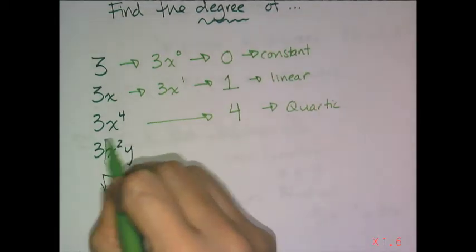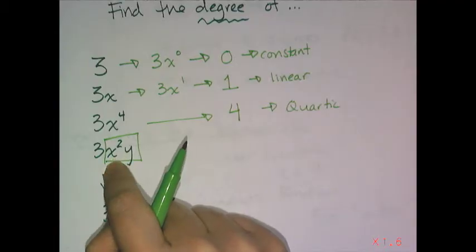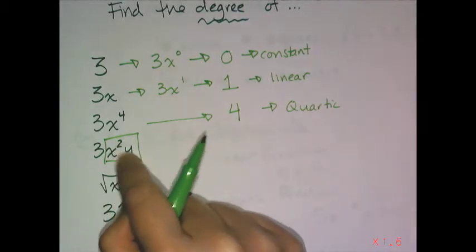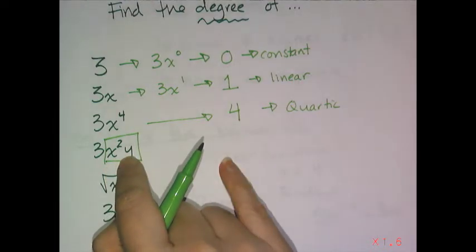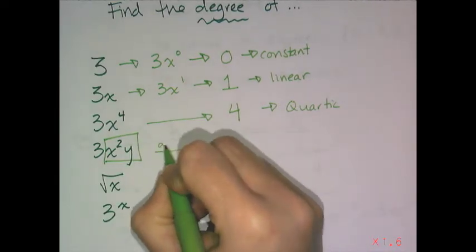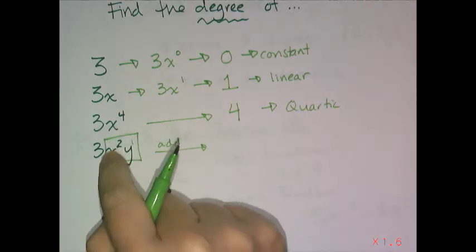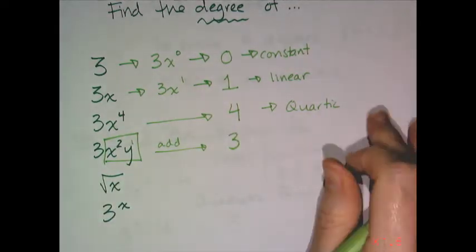Now this one is special, and we don't really see this very much in Algebra 1. This is more prep work for Algebra 2. You notice there are two variables, so when I want to find the degree of a term that has multiple variables, I have to add up the exponents. I have a square and I have a first degree, which means that's a third degree.